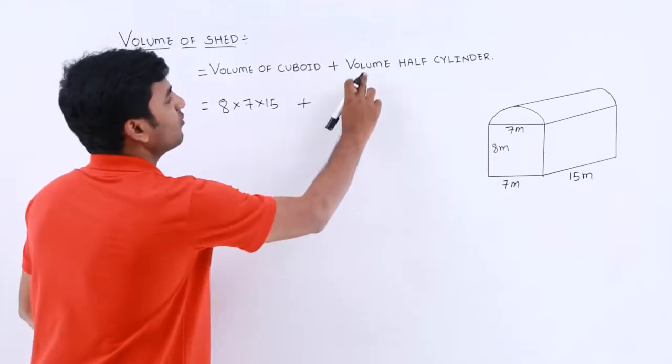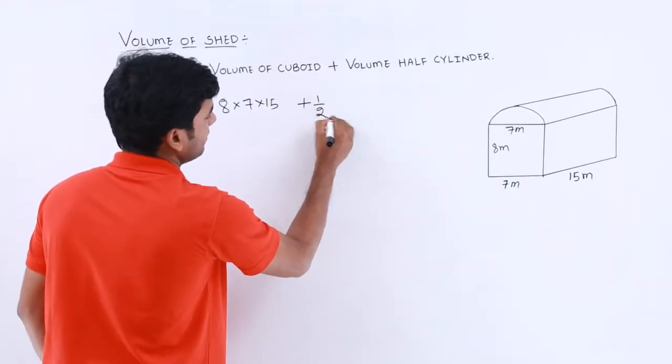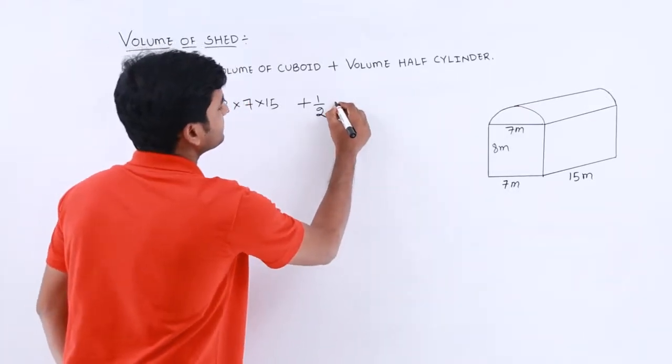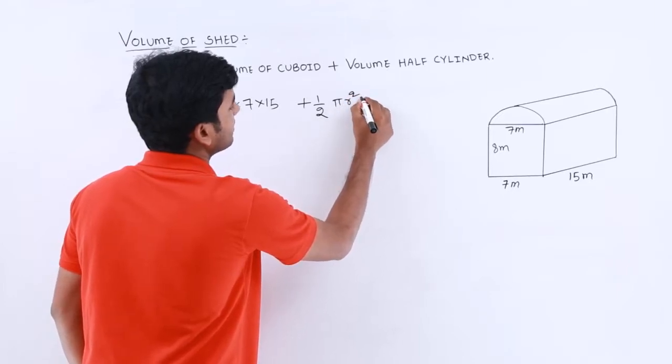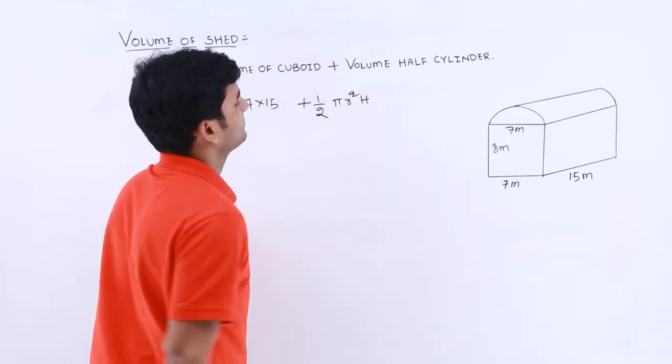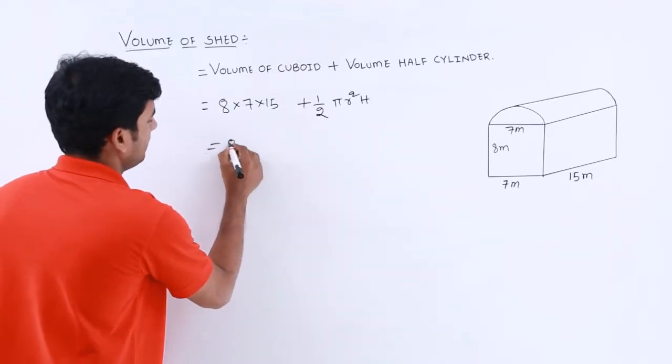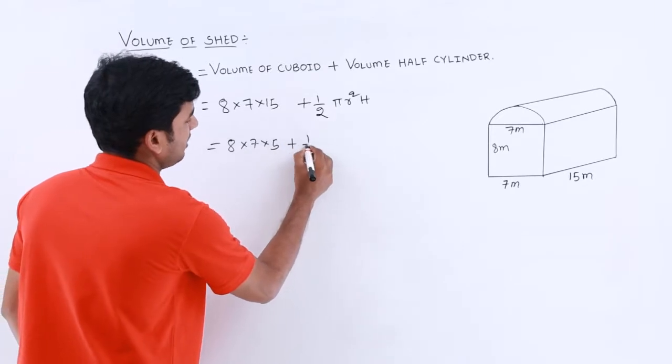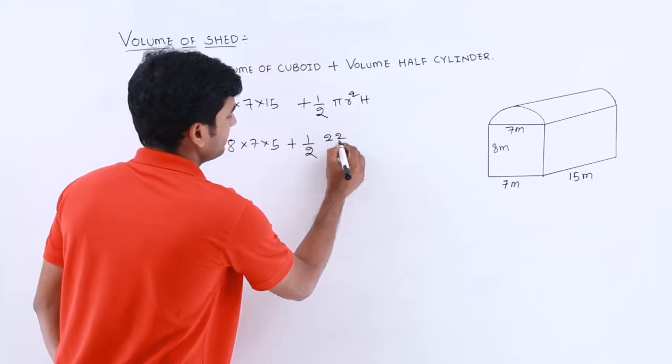Here volume of half cylinder, first of all half and volume of cylinder formula will be pi r square. Here 8 into 7 into 15 plus half, here pi value we know that is 22 by 7.